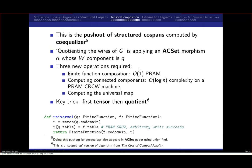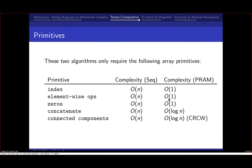The primitives needed are: finite function composition (array lookup), connected components (log-n parallel complexity), and computing the universal map (also array indexing, with concurrent writes where an arbitrary write succeeds). The key insight is that tensor followed by wire quotienting is all that composition requires. Sequential complexity is linear; parallel complexity is logarithmic in the size of the graph.